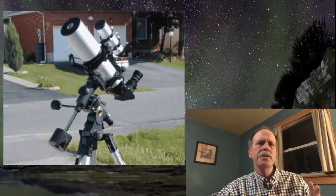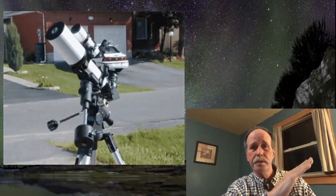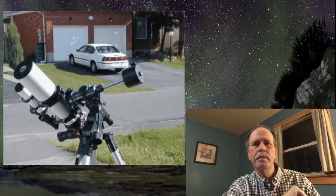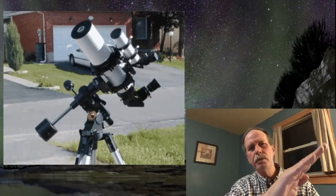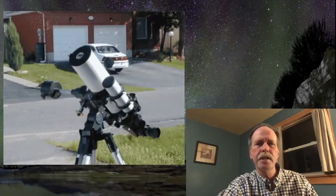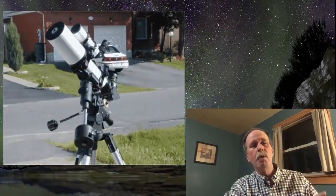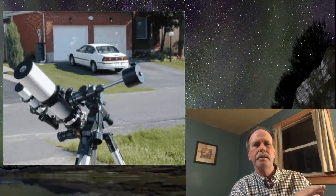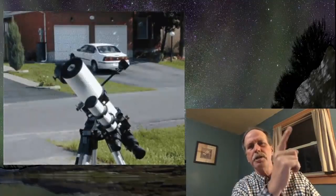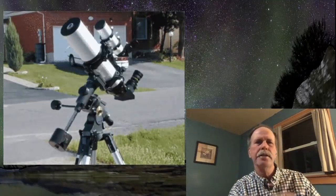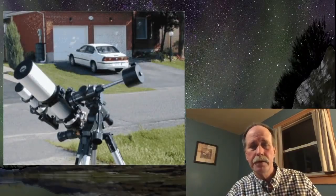While the normal situation is that that polar axis is pointed directly at the northern celestial pole, let's do something a little bit different. Suppose instead of pointing it at the north celestial pole we point it over to the northeast sky at the star Capella. Then if we move the telescope quickly in right ascension, what would happen to the stars around Capella? They would form circular star trails centered on the star Capella. This is an important concept to remember for later.